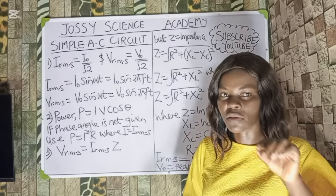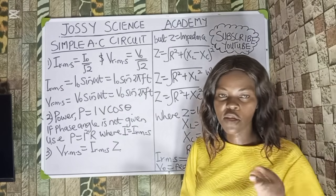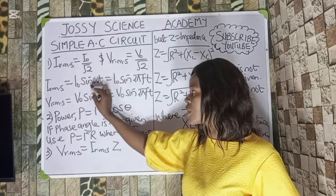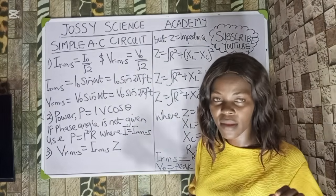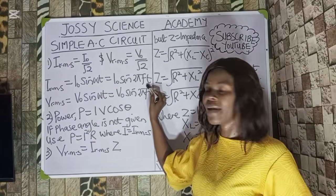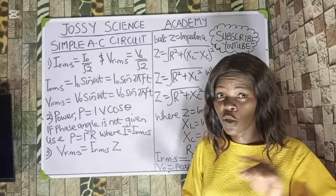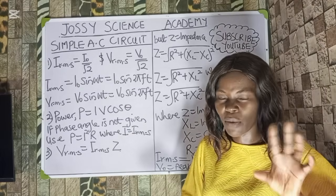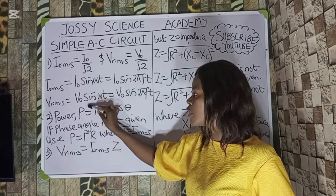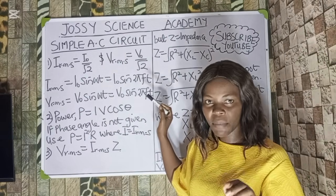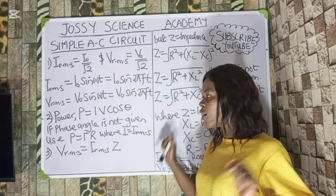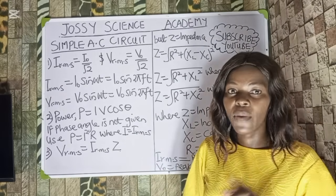For instantaneous values: the instantaneous current I equals I₀·sinωt. Since ω equals 2πf, this becomes I₀·sin(2πft). Similarly, the instantaneous voltage V equals V₀·sinωt, or V₀·sin(2πft). Power in the AC circuit is calculated as P equals I·V·cosθ, where θ is the phase angle. If the phase angle is not given, simply use P equals I²R.